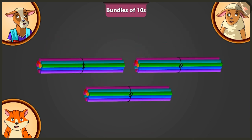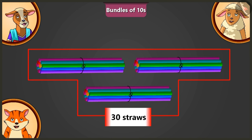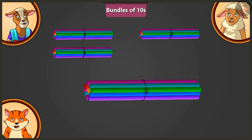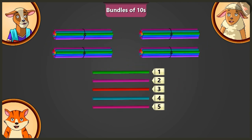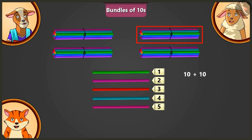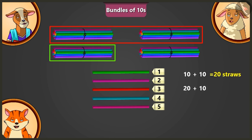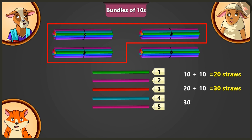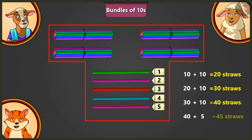Well done, Lily. So yes, Lily, you need 45 straws. There are 30 straws here. Now how many more straws will we add to them? We will put 1 more bundle of 10 straws and keep 5 straws. Very good, Lily. Now tell me, how many straws are there in total? Adding 10 and 10 — 20. Adding 10 to 20 — 30. Adding 10 to 30 — 40. Adding 5 to 40, there are 45 straws in total.